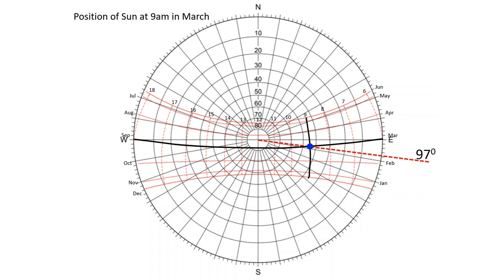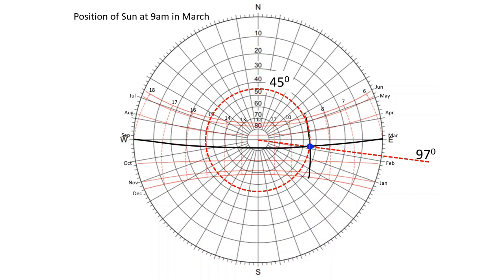Now we have to find the altitude angle. Here the point is somewhere between the 50 line and the 40 line, so we have to insert a new circle and measure the altitude angle. Here the altitude angle corresponds to 45 degree. So we can locate the position of the sun at 9 am in March as 45 degree altitude angle and 97 degree azimuth angle.